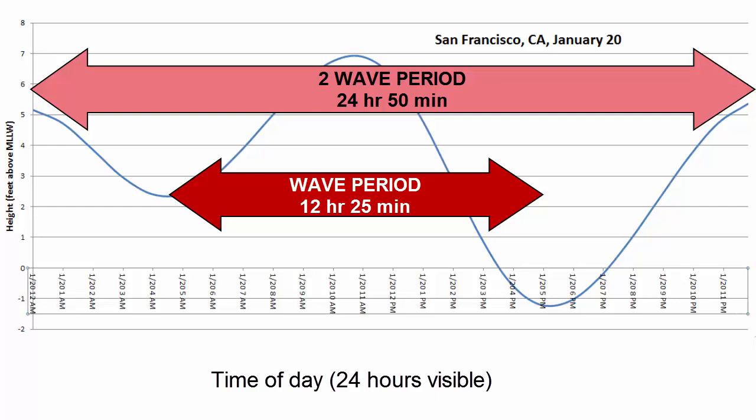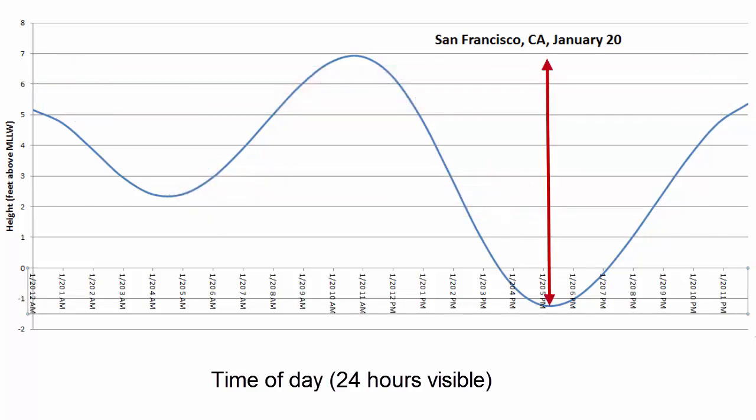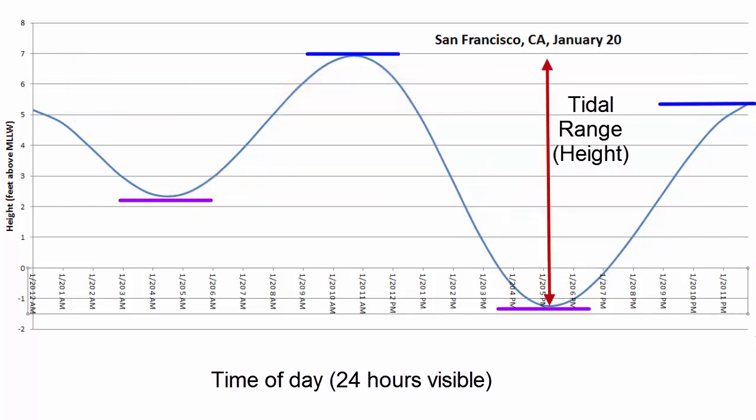What that means is that if you experience high tide on a beach at 3 p.m. this afternoon, the next high tide would be at 3:25 a.m. tomorrow morning, then another at 3:50 p.m. tomorrow afternoon, and so on. The height of a tidal wave gets its own term: tidal range.